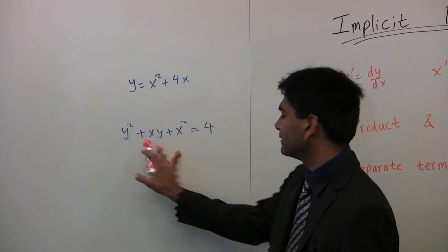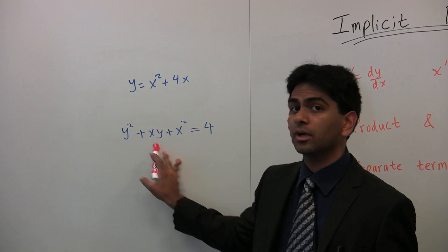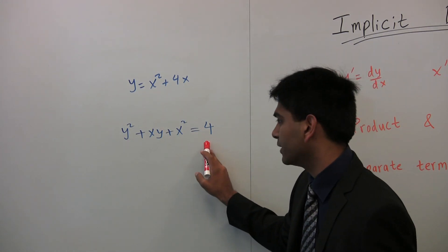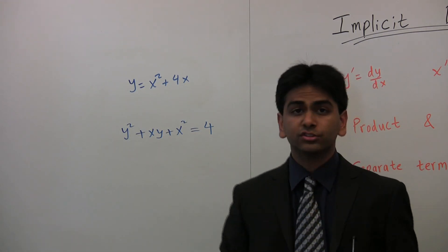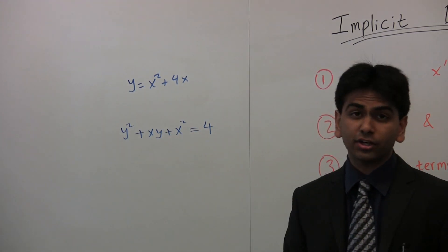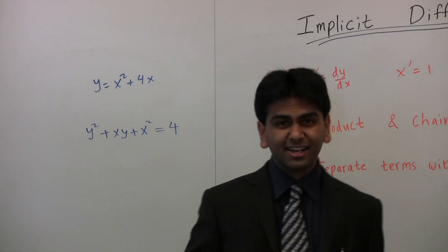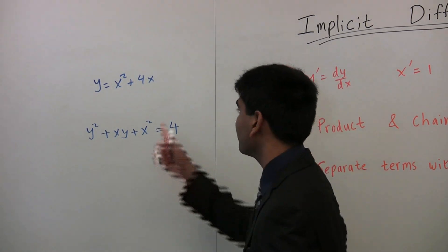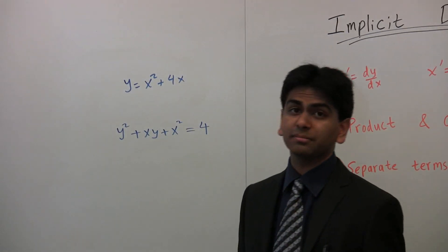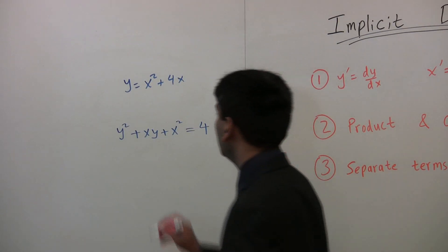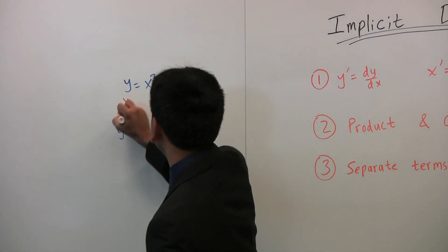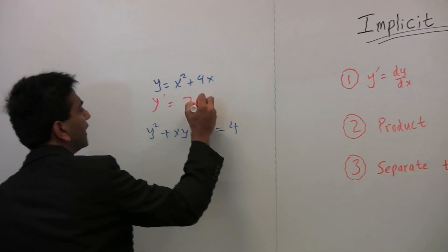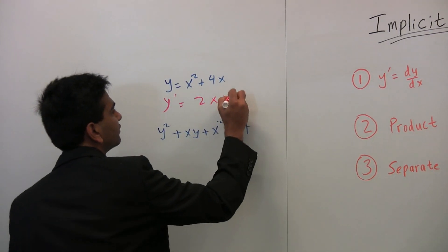Whereas here, the x's and the y's are sort of jumbled up, so this is an implicit function. So far we've been looking at explicit differentiation, which is how to find the derivative of something like this, which would just be y prime equals 2x plus 4.